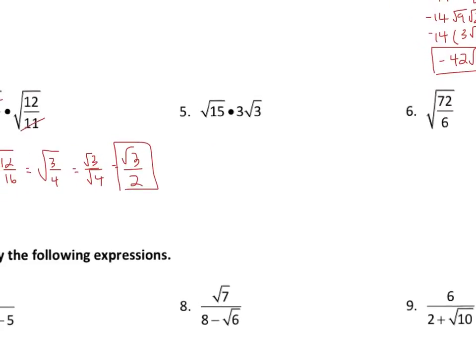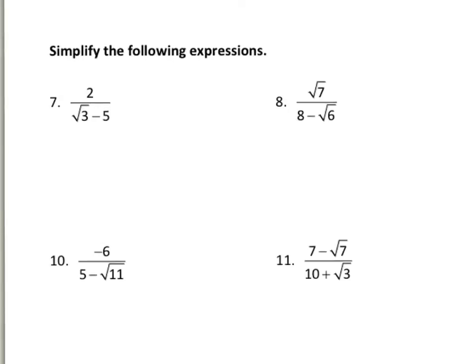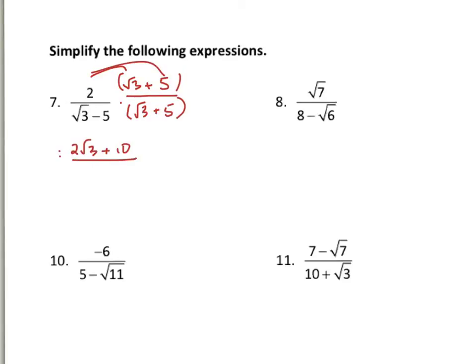Looking at the next set — multiplying by the conjugate. Essentially, all you have to do is multiply top and bottom by the conjugate. For example, if you have a denominator of root three minus five, you can't just multiply the bottom by root three plus five — you have to multiply both top and bottom, since that's essentially multiplying by one and doesn't change the value.